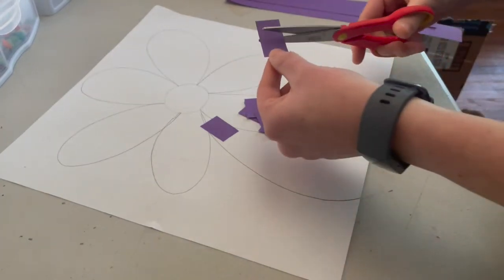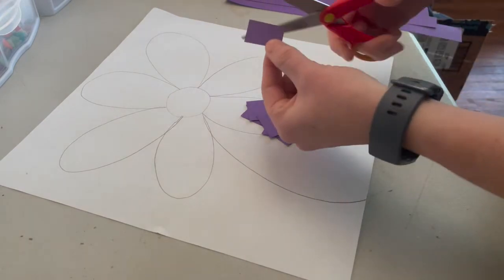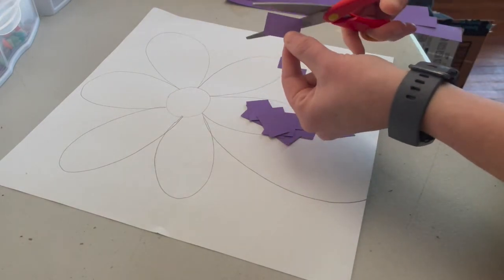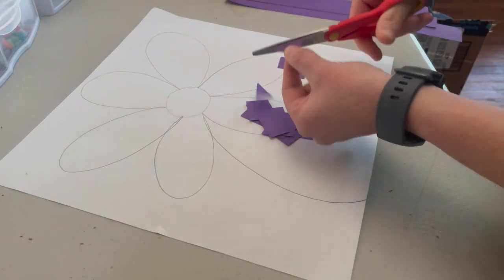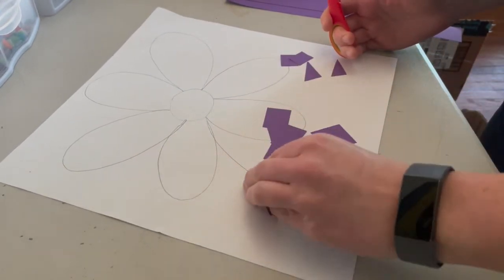So to cut a triangle, you're going to take one of your little squares and you're going to cut it from corner to corner to make a triangle. You might have to practice a couple times until you get it right.